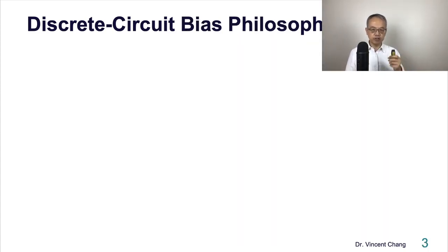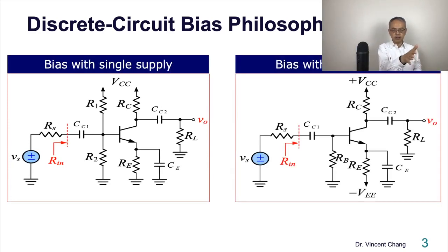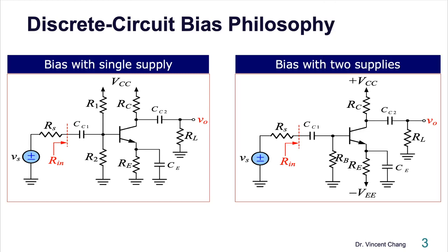So here's the bias philosophy, the discrete circuit bias philosophy, which I taught in other lecture videos. The first one is a common emitter amplifier. The second one is also another common emitter amplifier with different bias scheme. The first bias scheme is the bias with single supply. The other one, the one on the right, is the bias with two supplies. Here's the first bias, the single supply with four resistors, this big. And the other one is the bias with two supply, VCC and the negative VEE.